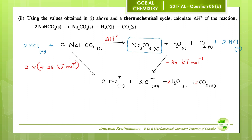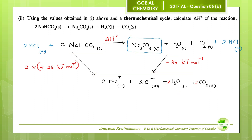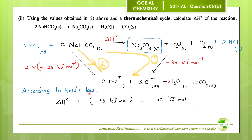The number of atoms on all three levels are the same, so our thermochemical cycle is complete. According to Hess's law, the enthalpy change of path 1 equals the enthalpy change of path 2. Therefore: ΔH° + (−35 kJ/mol) = 50 kJ/mol. Therefore, the enthalpy change of this reaction is +85 kJ/mol.